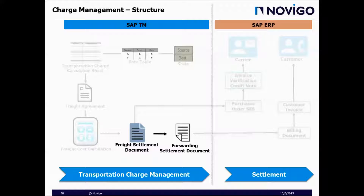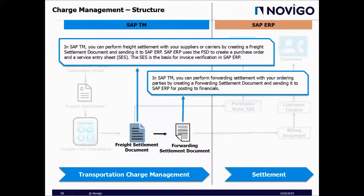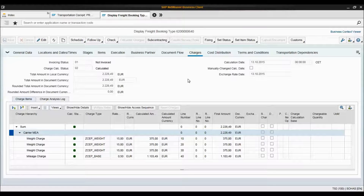After freight cost calculation has been done, two kinds of documents can be created: the freight settlement document and the forwarding settlement document. In SAP TM you can perform freight settlement with your suppliers or carriers by creating a freight settlement document and sending it to SAP ERP. SAP ERP uses the freight settlement document to create a purchase order and a service entry sheet. The service entry sheet is the basis for invoice verification. For forwarding settlement, you create a forwarding settlement document and send it to SAP ERP for posting to financials. The freight settlement document belongs to suppliers and carriers, while the forwarding settlement document belongs to ordering parties.